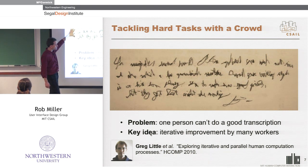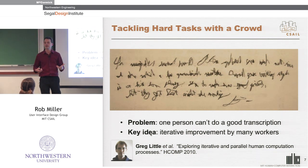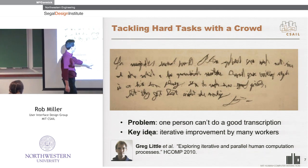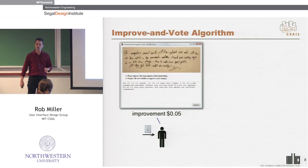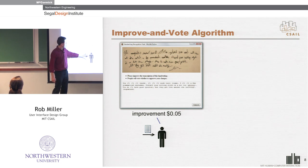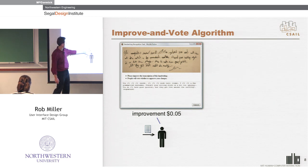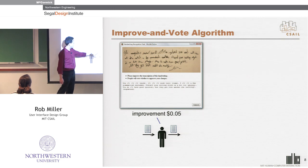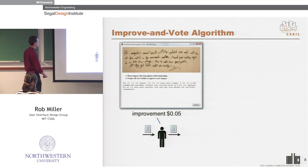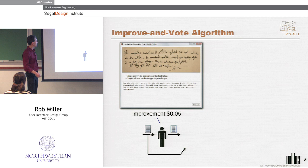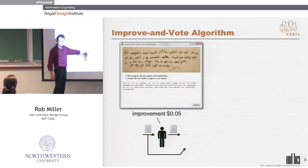Let me come back to the handwriting transcription problem and give you an example of one algorithm — one design pattern — that deals with this kind of noise. The key idea is iterative improvement by many workers with constant quality control checking. One person gets an input, which might be a partial transcription — if it's the first person, it starts blank — and they fill in a few words, making a small improvement. To make sure this person is actually making an effort and not being noisy, we take their input partial transcription and the hopefully improved one they produce.